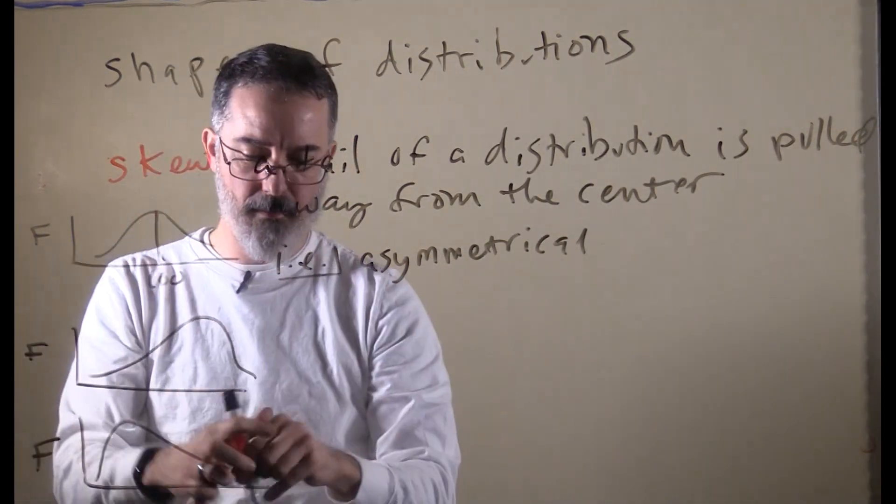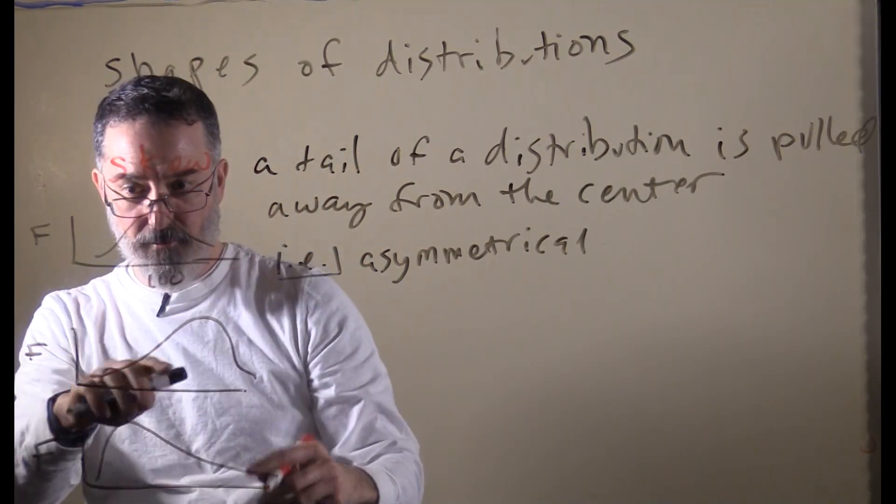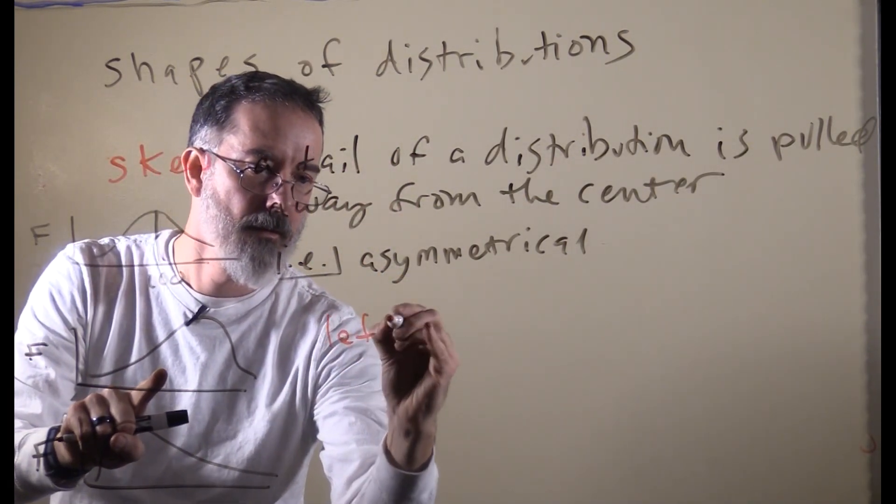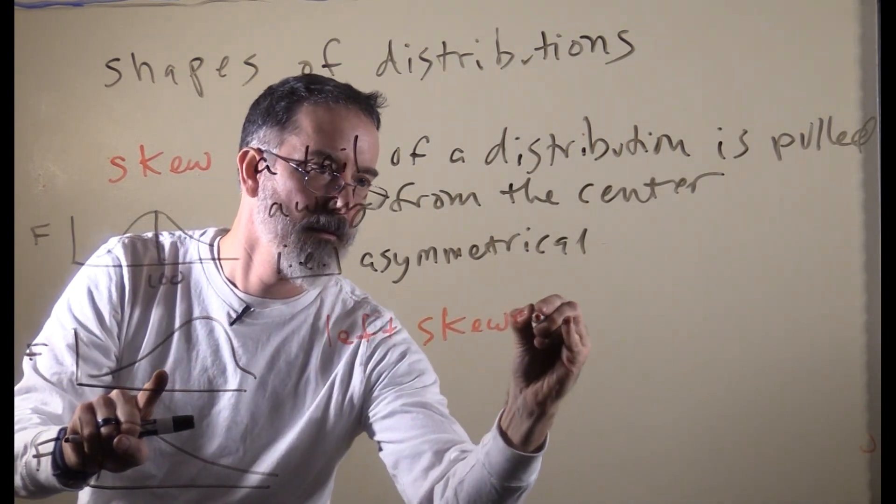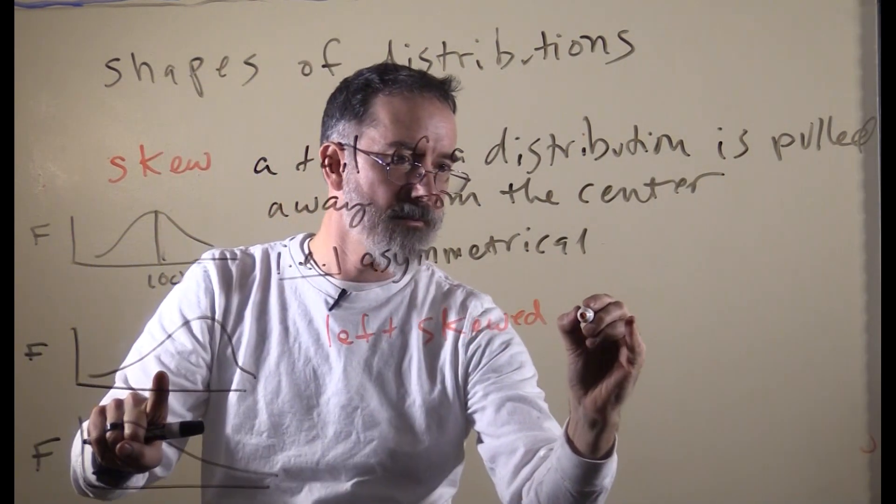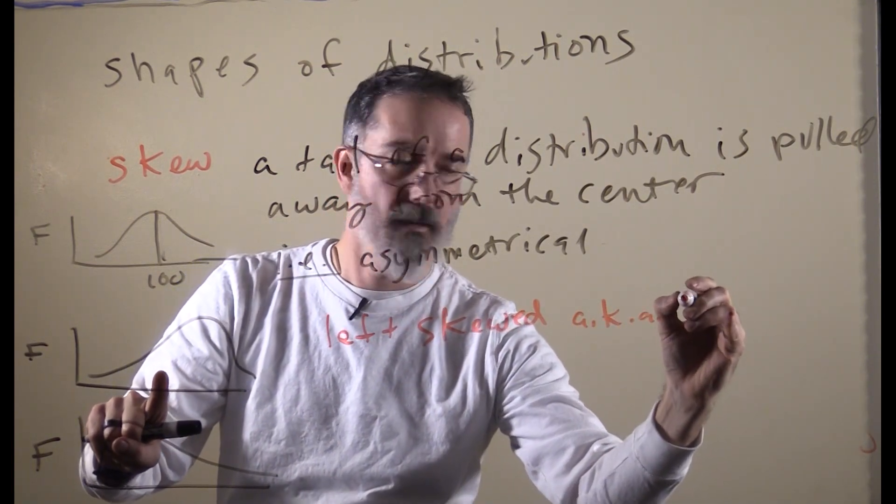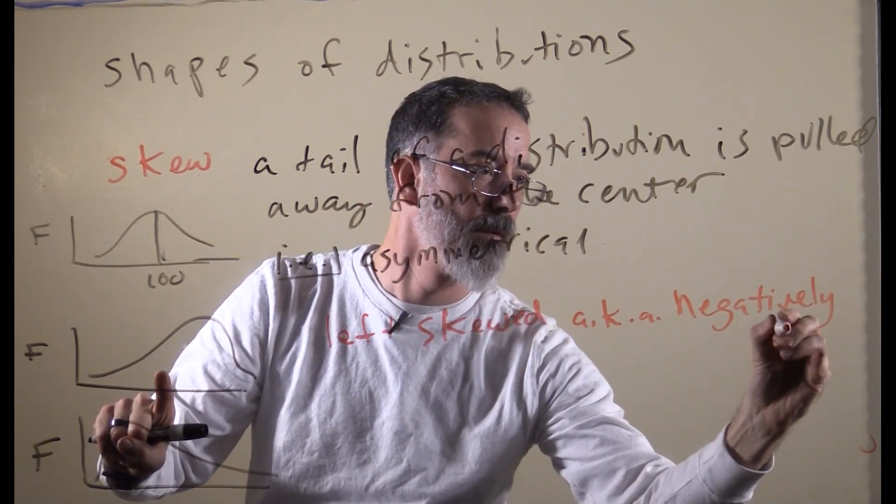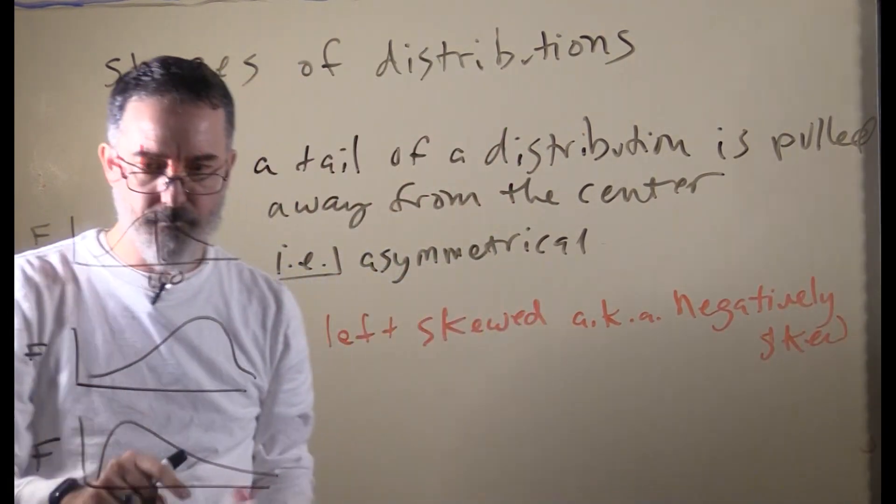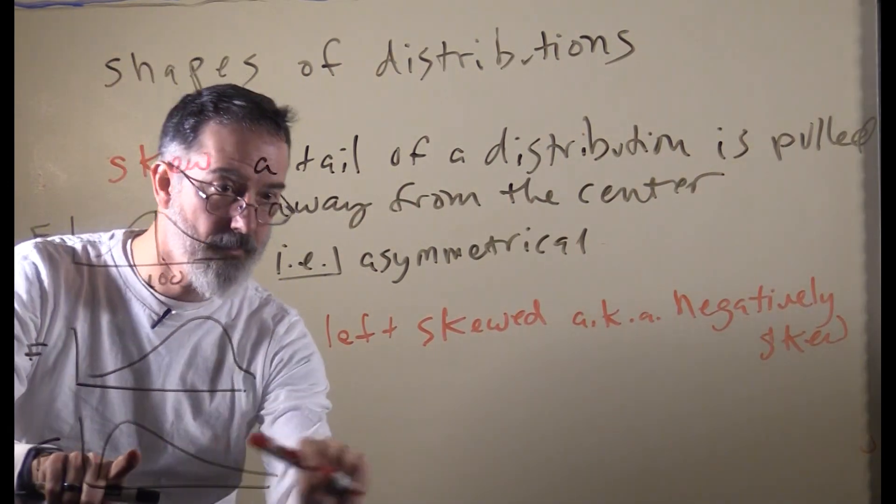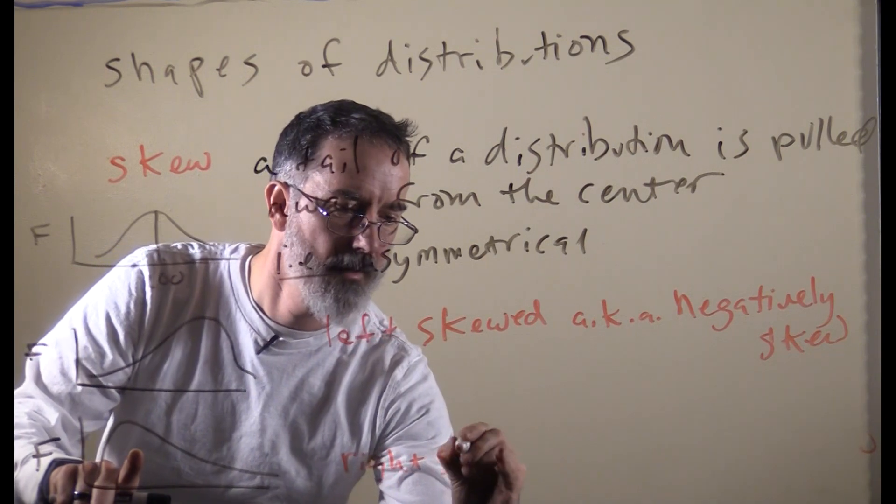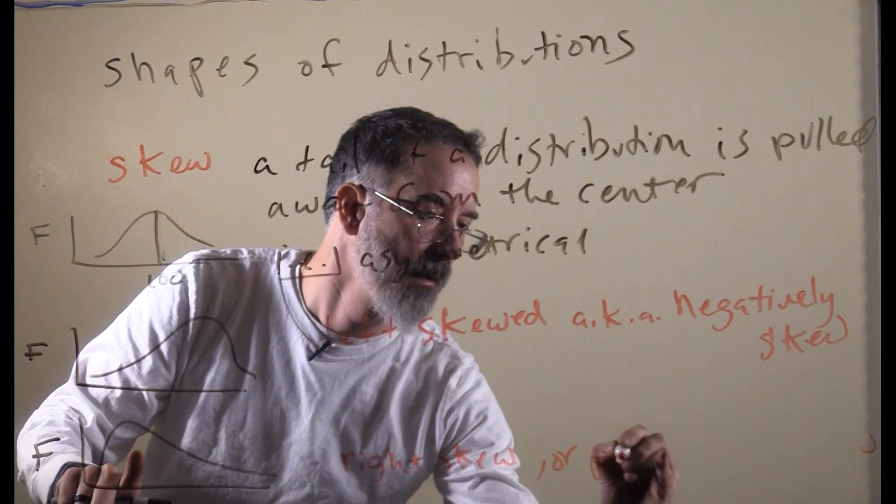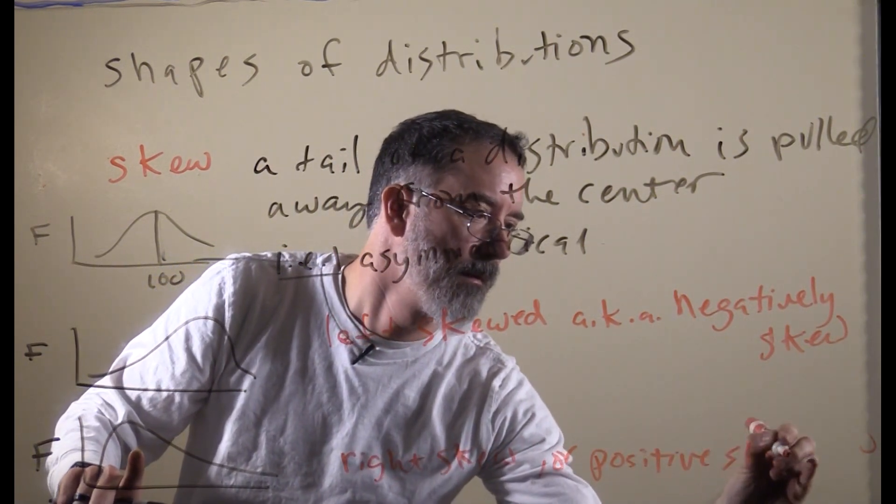This one, when it is skewed with the tail being pulled off this way, that is left skewed, also known as negatively skewed. And if it is pulled off to the right, that is right skew, also known as positive skew.